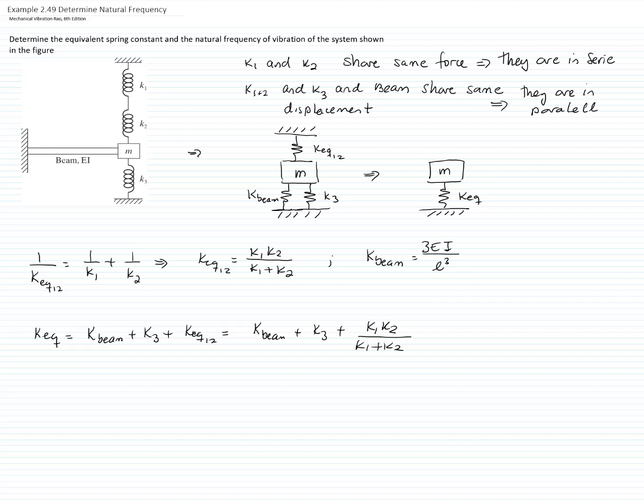the constant of the beam plus K3 and then times K1 plus K2 plus K1 times K2, all that divided by K1 plus K2. And this is the equivalent constant of the spring for the whole system.